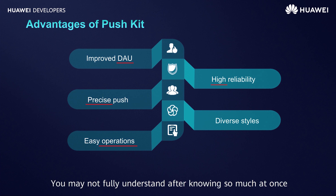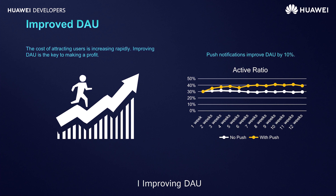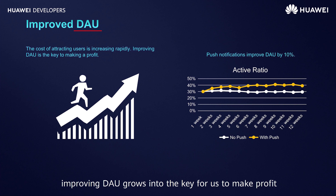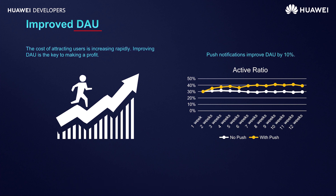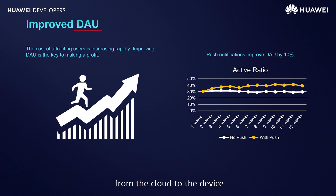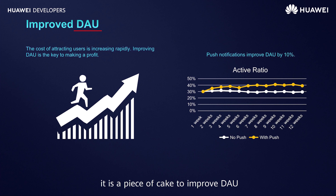Advantage 1: Improving DAU, daily active user. At present, since the cost of acquiring new users is increasing rapidly, improving DAU grows into the key for us to make profit. Huawei PushKit has established a high-quality message channel from the cloud to the device. High-quality means high-speed, safety, and accuracy. It's like a highway allowing your information to reach users safely, quickly, and closely connecting users with your apps. With such a high-speed link, it is easy to improve DAU.